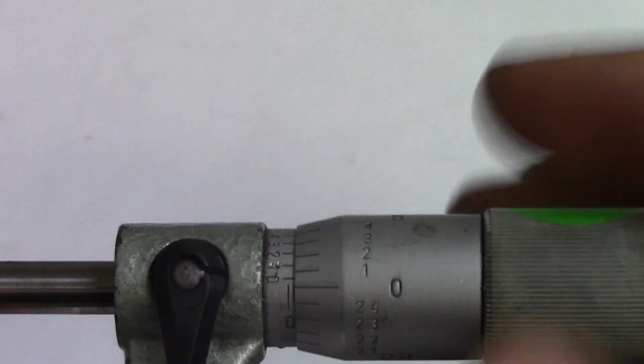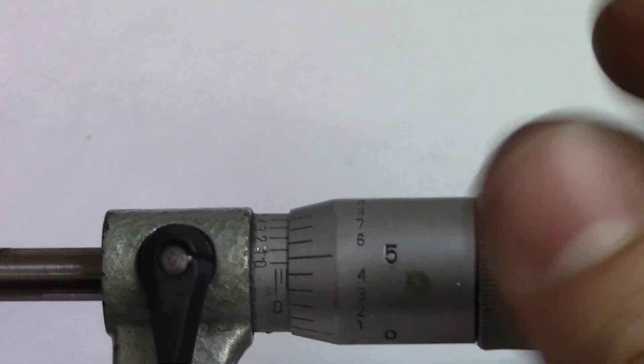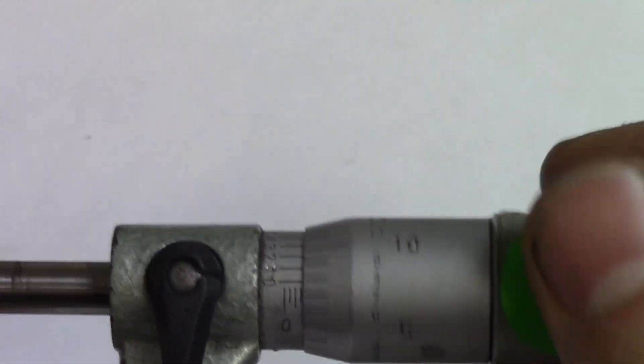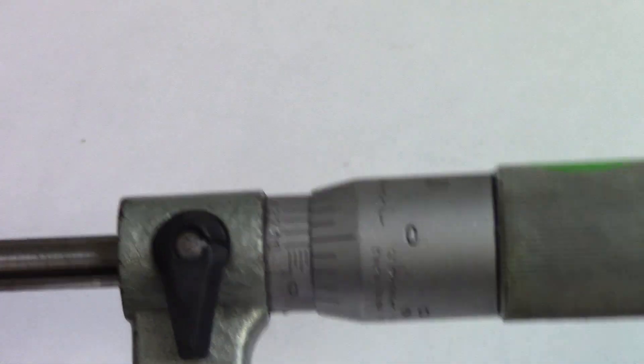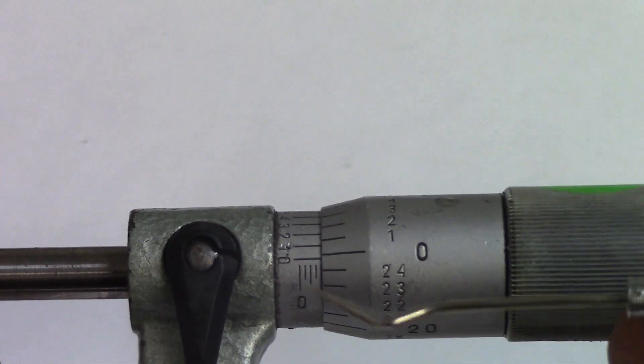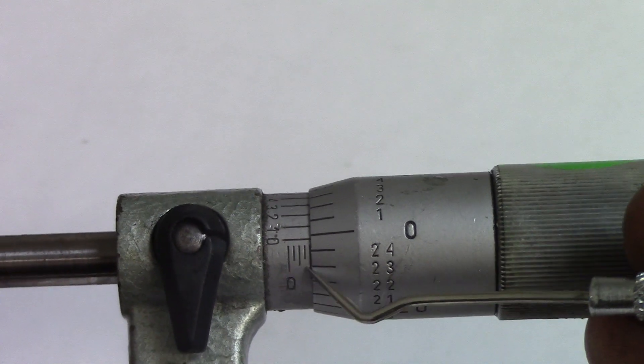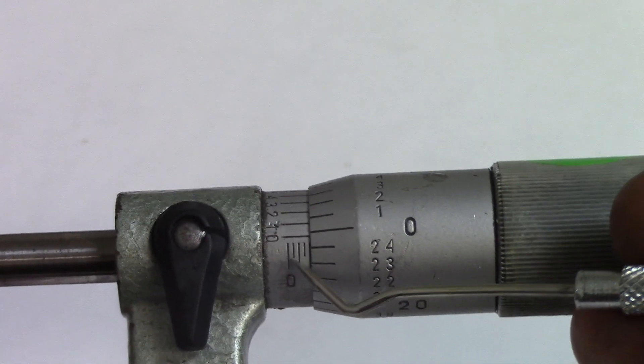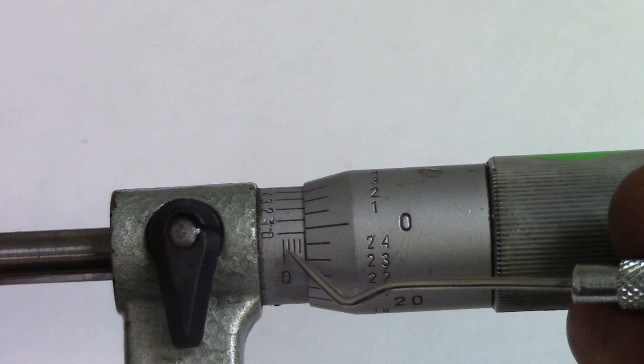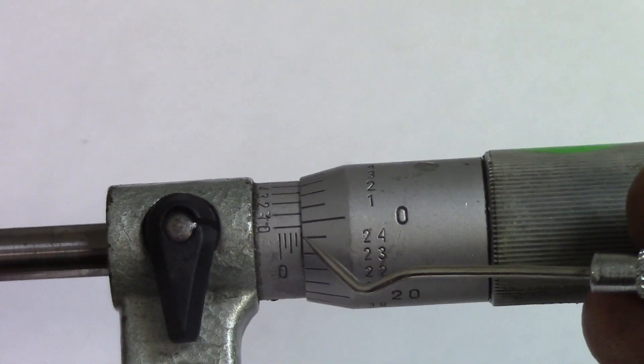We're going to open this up a little bit and explain what you're seeing. The very first thing you want to do when reading micrometers is look at these numbers right here. Each mark is worth 0.025, so 25 thou. So it's 25, 50, 75, and then 100.